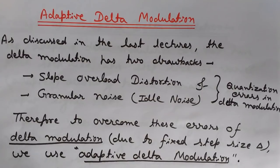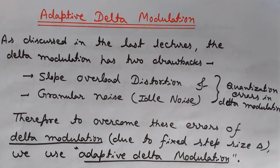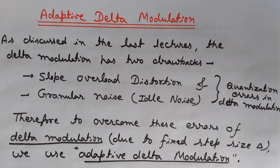These errors are caused due to the fixed step size used in delta modulation. But adaptive delta modulation overcomes these two drawbacks. Here I will tell you the basic concept of adaptive delta modulation and how it corrects and overcomes these errors.